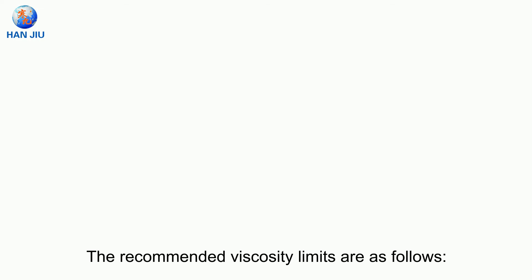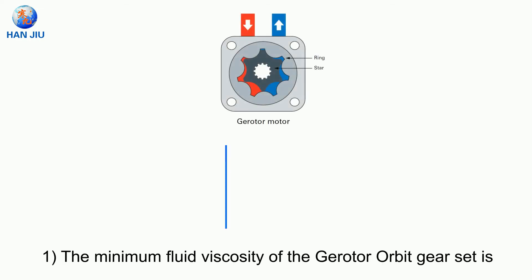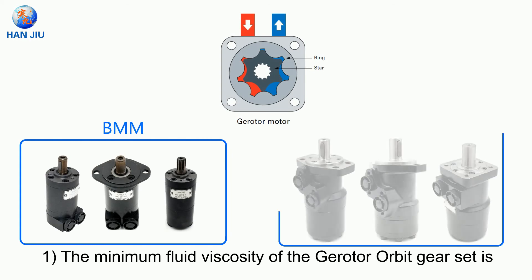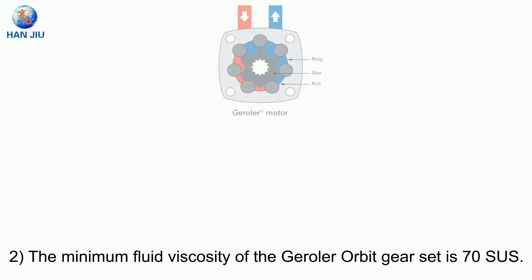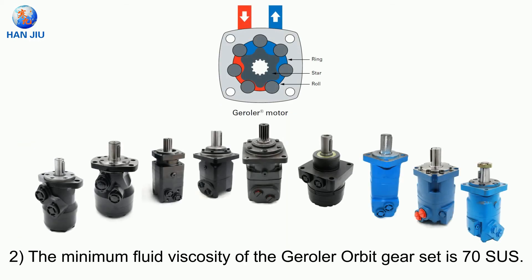The recommended viscosity limits are as follows. First, the minimum fluid viscosity of the gerator orbit gear set is 100 SUS, or the value calculated by the formula 20 × PSI ÷ RPM = SUS. Second, the minimum fluid viscosity of the geraler orbit gear set is 70 SUS.